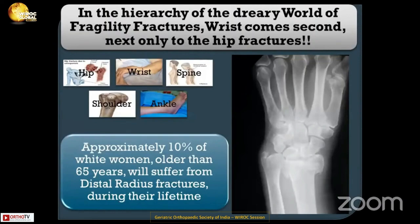In the hierarchy of the dreary world of fragility fractures, wrist comes second, next only to hip fractures. Approximately 10% of white women older than 65 years will suffer from a distal radius fracture during their lifetime.